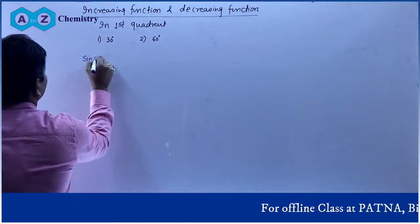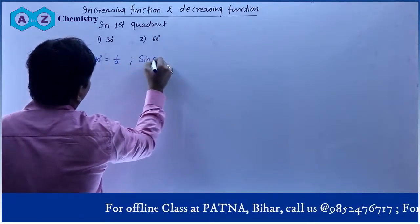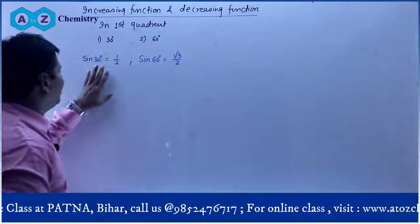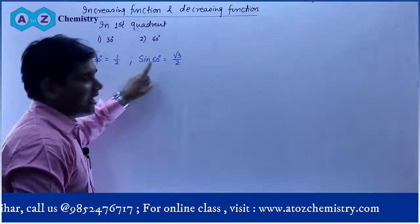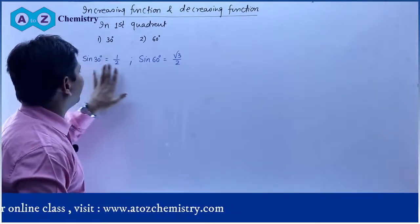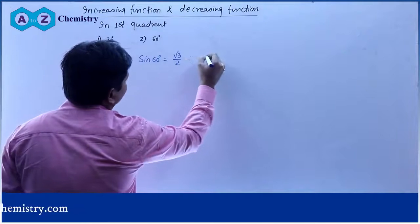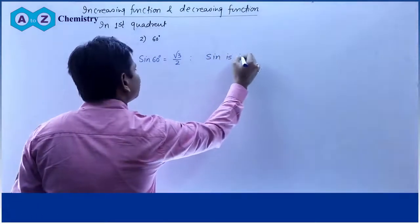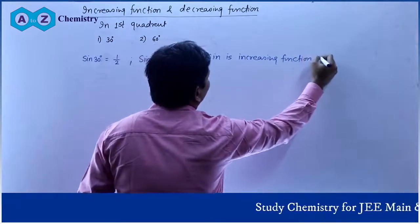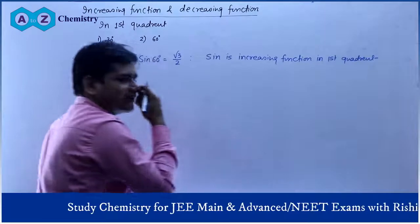First quadrant mein agar aap sine dekhoge: sin 30° = 1/2 aur sin 60° = √3/2. Aap dekh sakte ho ki angle 30° se badhakar 60° hua — matlab x badha — toh values bhi badhi: sin 30° = 1/2 aur sin 60° = √3/2. Values bhi badhi, isliye sine is an increasing function in the first quadrant.